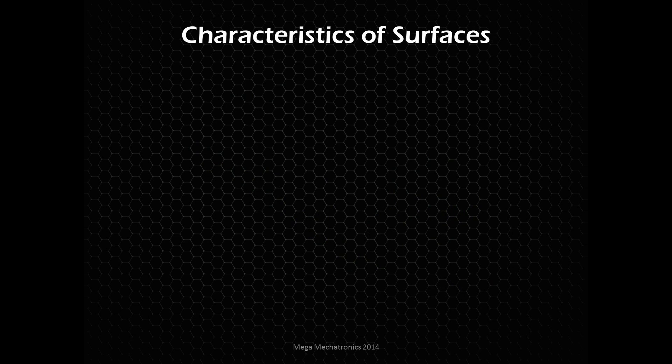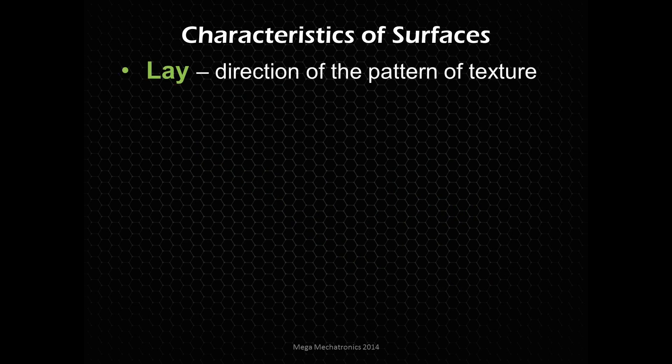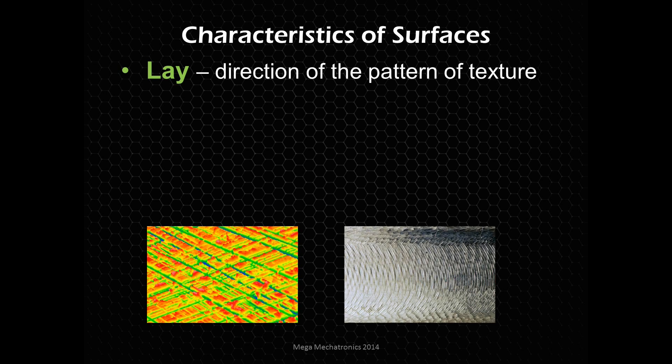So, characteristics of surfaces. First we have the lay, and that's the direction of the pattern of the texture of that surface boundary. You can see a couple of images there where one pattern has lines laying 90 degrees from each other. There are straight lines and then in the sort of milling process there are a lot of chatter marks, but you can tell a rotating tool was used. And on the other side it looks more like some sort of grinding or polishing system that was not rotating in a circular motion.